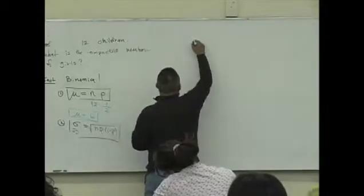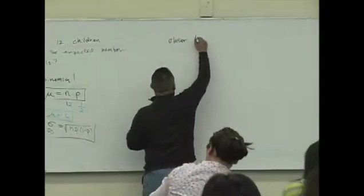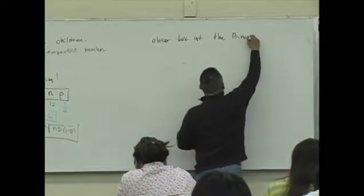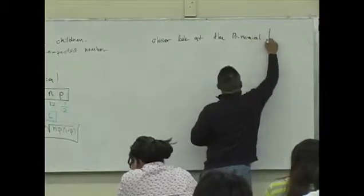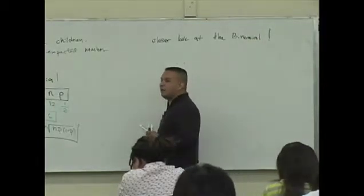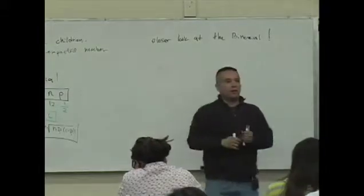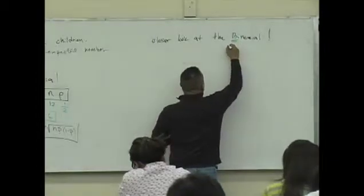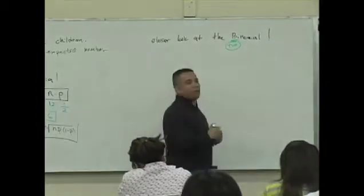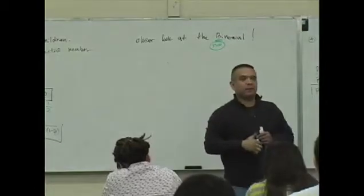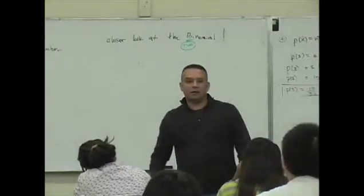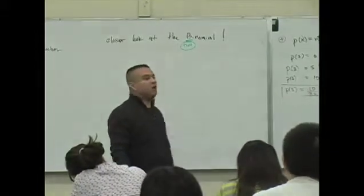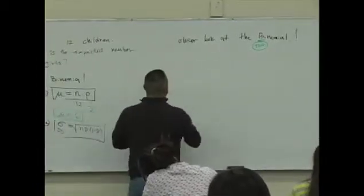Okay? So what we're going to do now is take a closer look. We're going to take a closer look at the binomial distribution. Now what's happening with the binomial is this. Bi means what? Two. That is a prefix for two. And what does that mean?